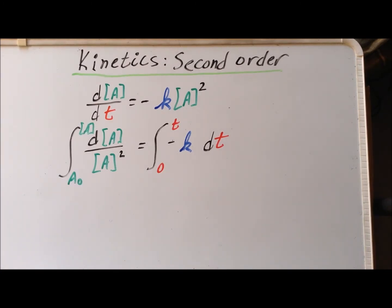Our initial condition is that at time t equals 0, the concentration of A was simply A₀, where I have left off the brackets just to make it more distinct that this is the initial amount of A. At some time t in the future, the concentration of A is simply the concentration of A as we have shown here. So we can integrate the left-hand side and integrate the right-hand side.